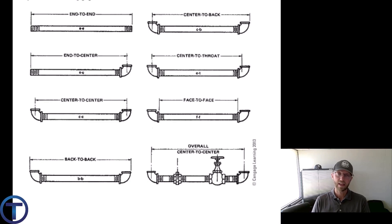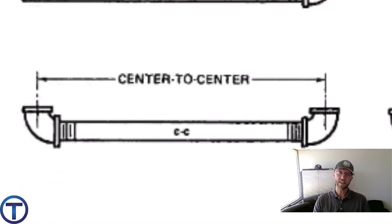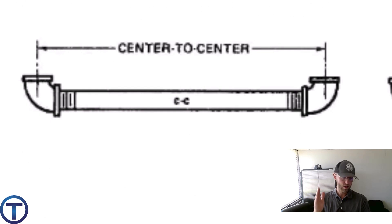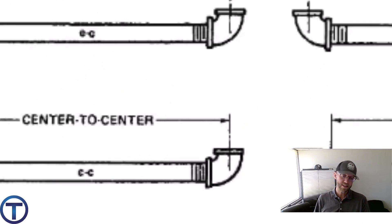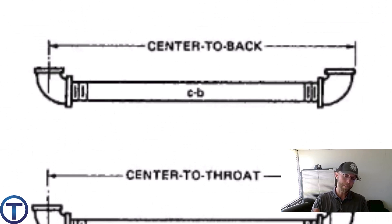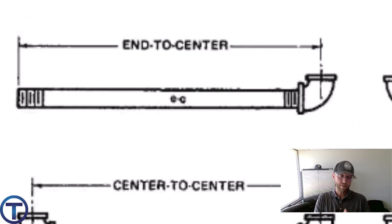Our goal is to get end-to-end measurements — that's the pipe we cut. Most of the time we deal with center-to-center, then deduct our fitting allowances. But there are alternatives that can be easier when measuring with a tape in the field. For example, center-to-back means pulling from the back side of one fitting to the center of the next — useful if you already have a pipe end out there to pull from.